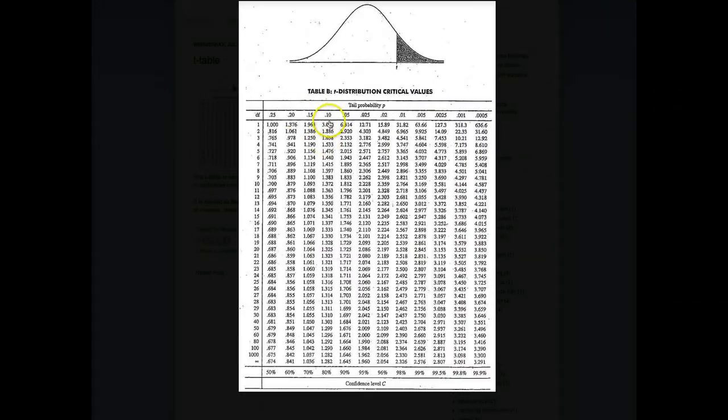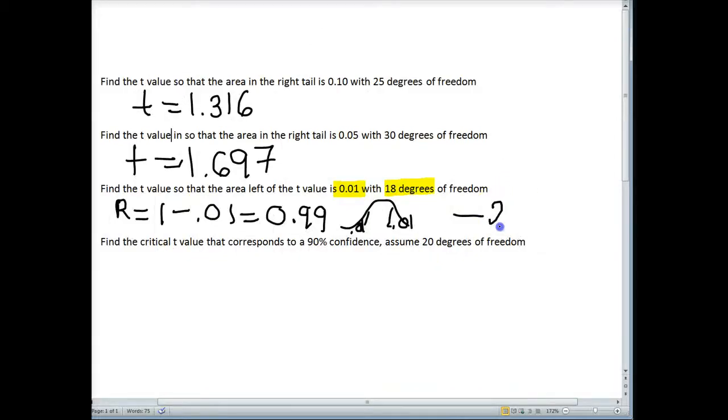So when I go to 0.01 and I go down to 18 degrees of freedom, 2.552. Because I am looking for the left and not the right, this will be a negative value.